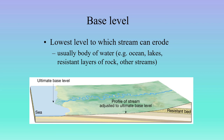Another very important term is base level — the lowest level to which a stream can erode. This is usually a body of water: an ocean, a lake, or another stream. Once the stream comes out of its channel into a larger body of water, energy dissipates. When energy dissipates, sedimentation occurs. So base level is the lowest level to which a stream can erode — when it enters that larger body of water, it deposits sediment rather than continues eroding.